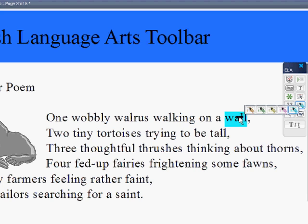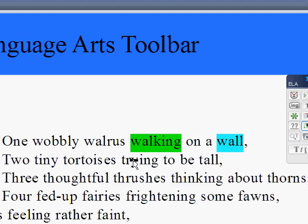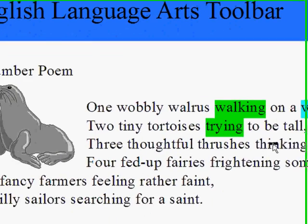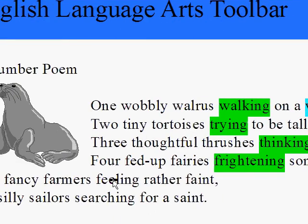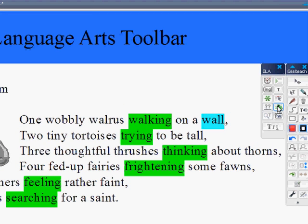So if I now take my word wall, put it on a blue card, and put it up on my word wall, they are going to correlate with what the students have seen in my presentation. So if I use green for my verbs, I can now use green to highlight all my verbs, and when they match up on the wall, the students will have a better visual correlation.